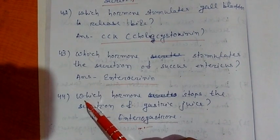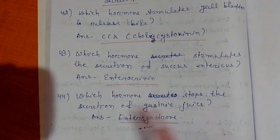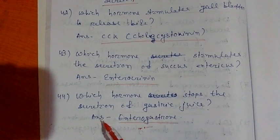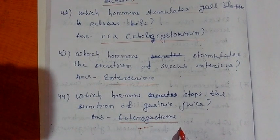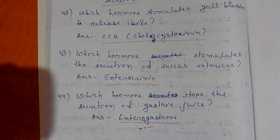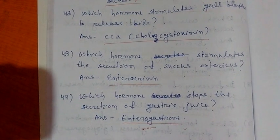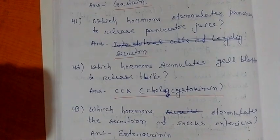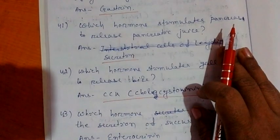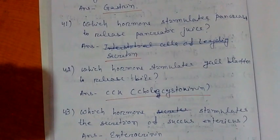Question number 44. Which hormone stimulates the secretion of gastric juice? That is enterocrinin. Thank you friends for watching. This is all about the questions from the chapter endocrine glands. Bye.